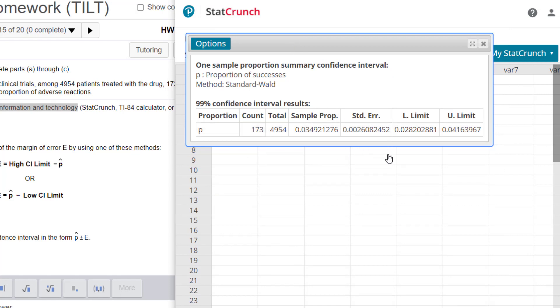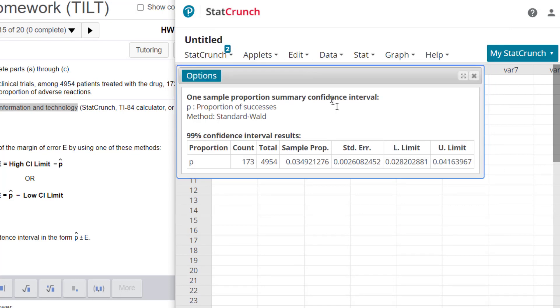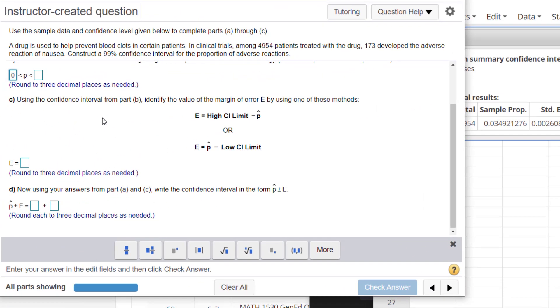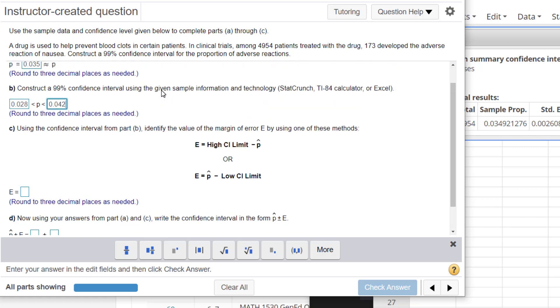On this one right here, once we get our output here, we want to put in our lower limit and upper limit which is our confidence interval limits. So we'll put these into MyLabs, we want to do three decimal places so 0.028 and then the upper limit will be 0.042 right there.